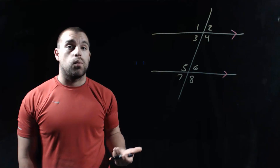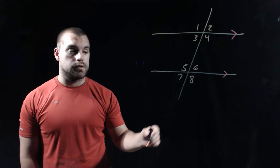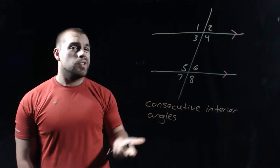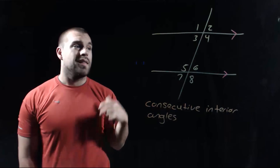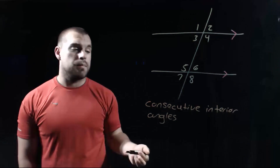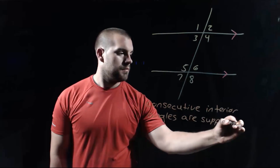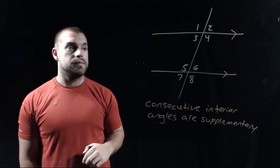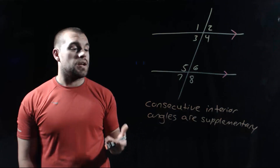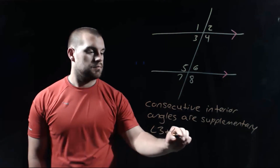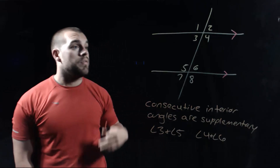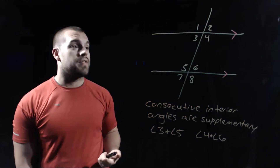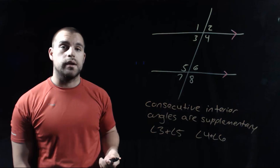Our last angle pair was consecutive interior angles. These ones aren't going to be congruent — they're different. These are supplementary, and remember, supplementary means they add up to 180 degrees. So we've got two pairs of consecutive interior angles: angles 3 and 5, and angles 4 and 6. Those pairs of angles will add up to 180 degrees.